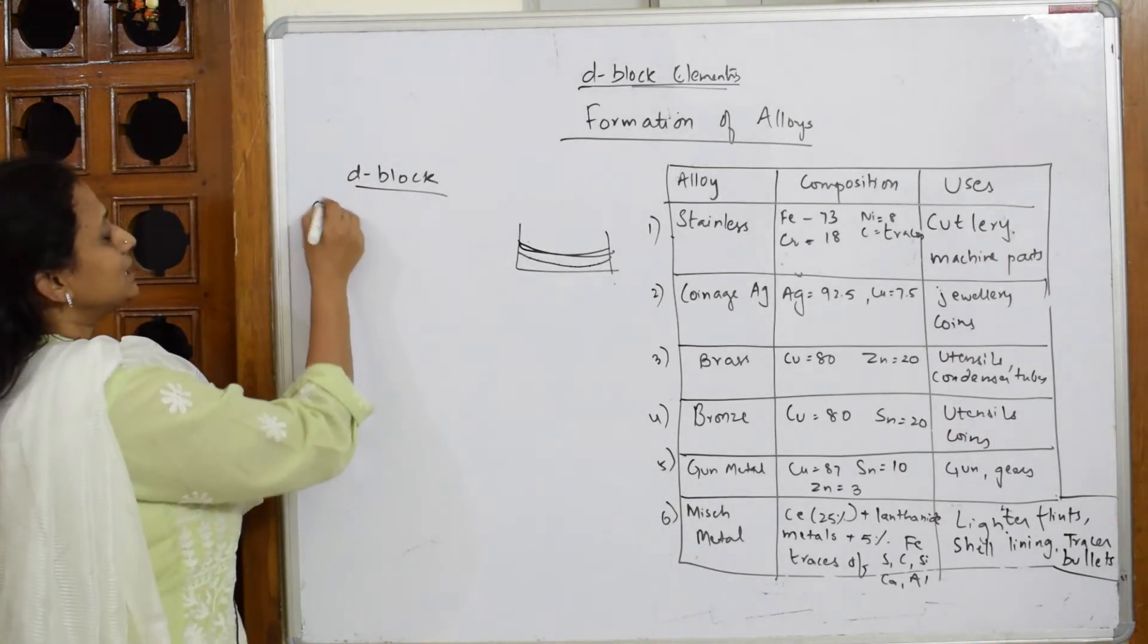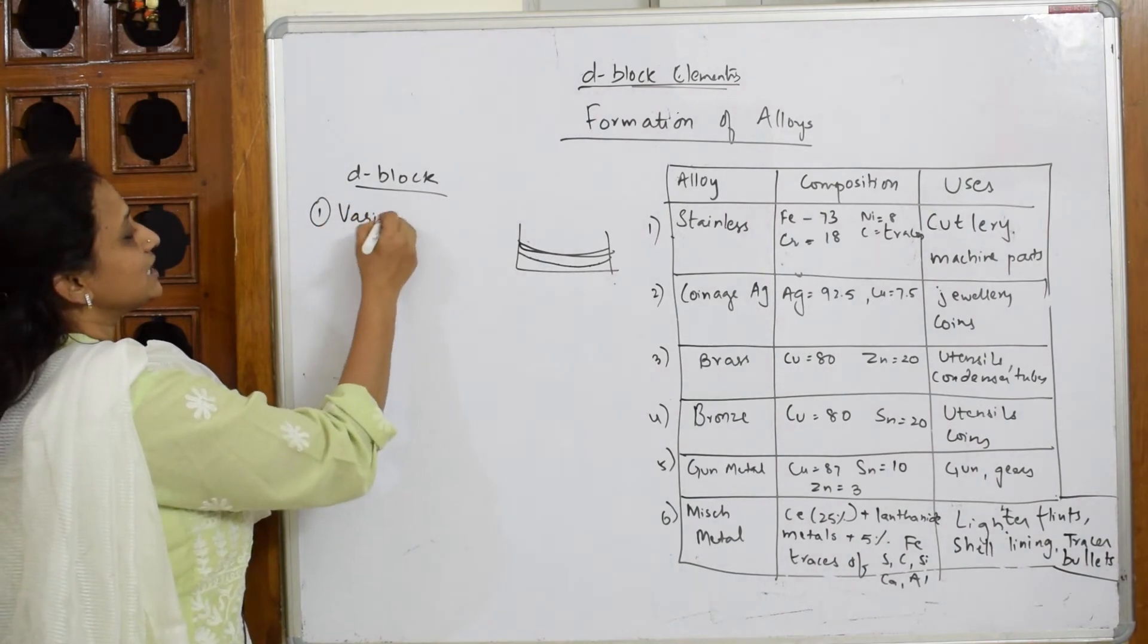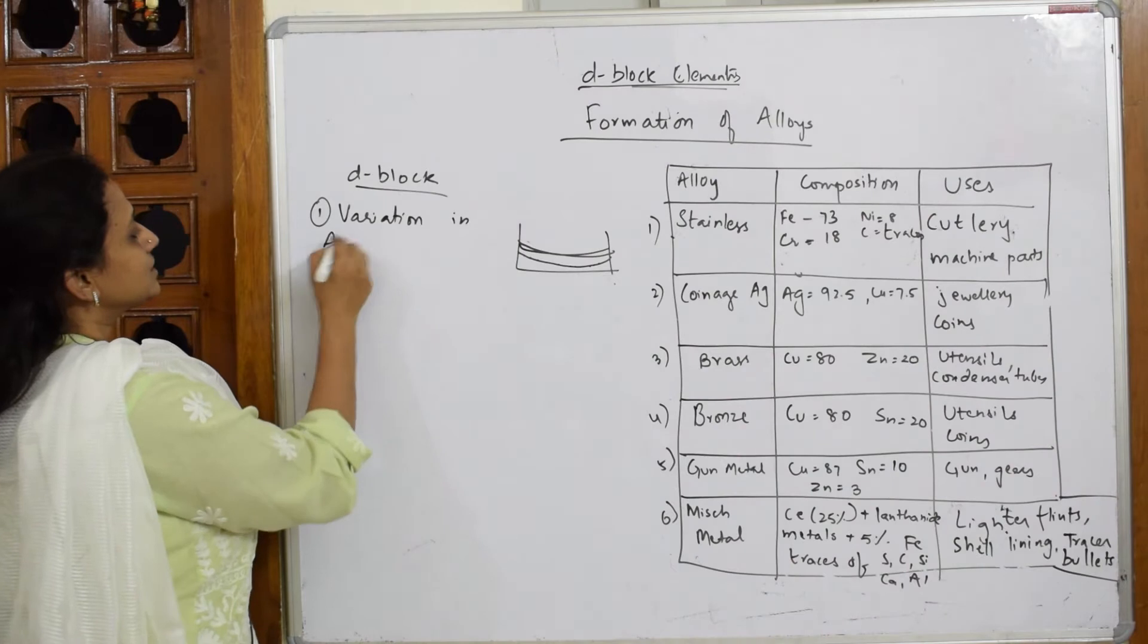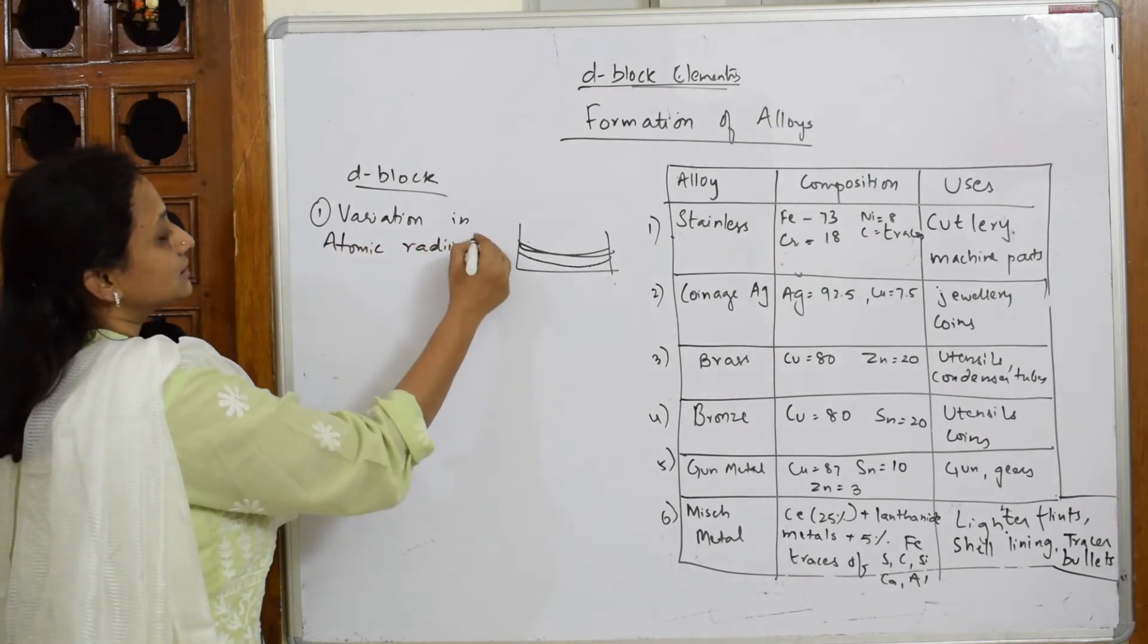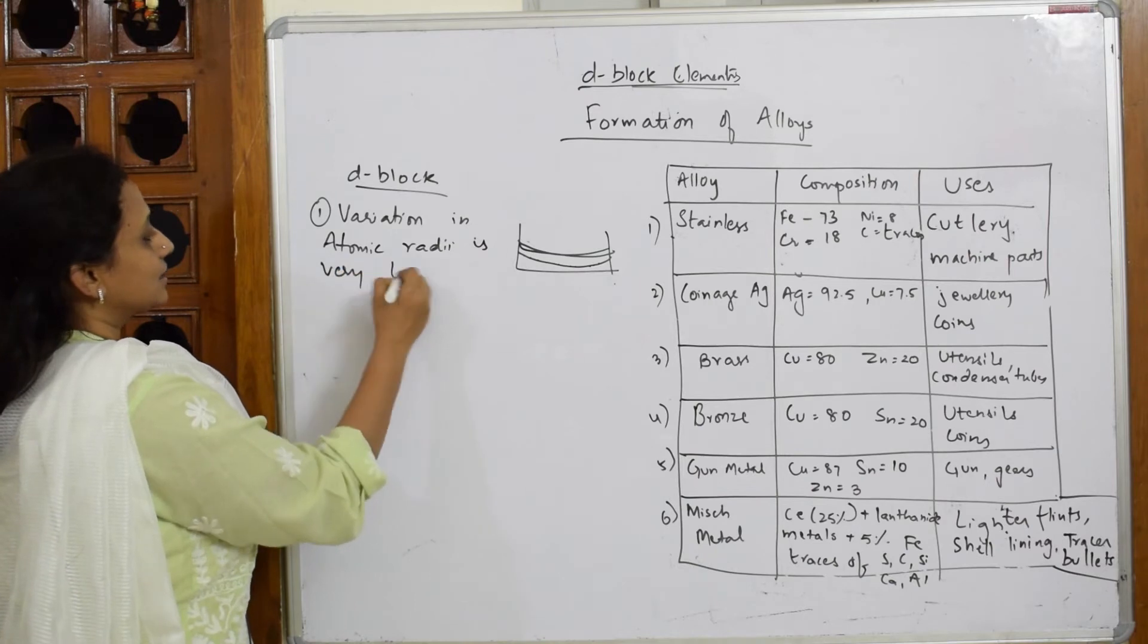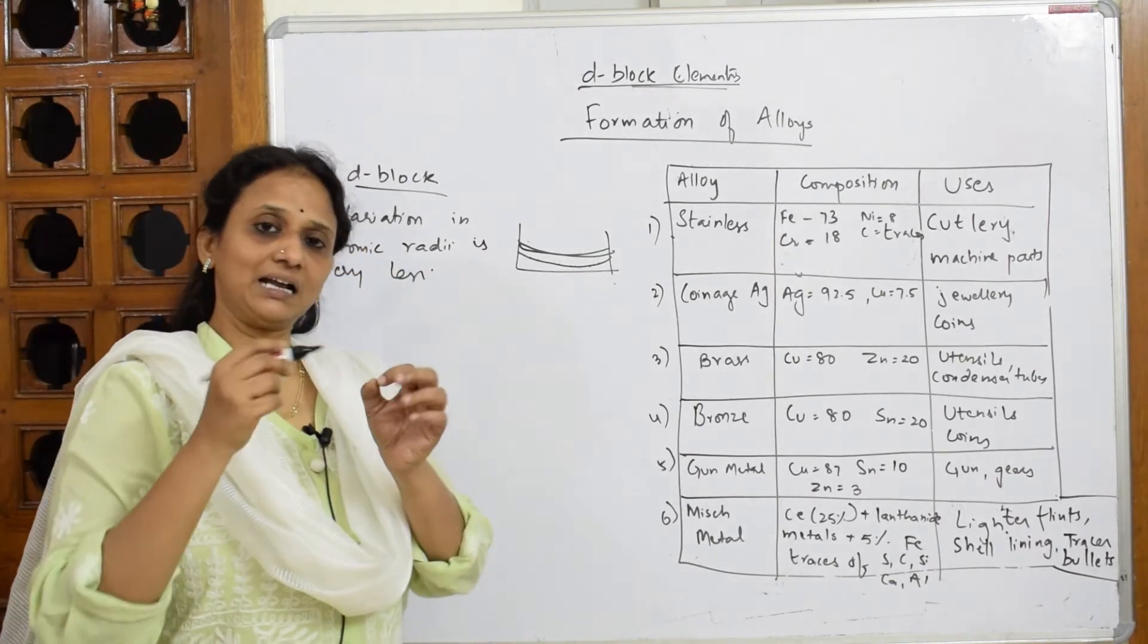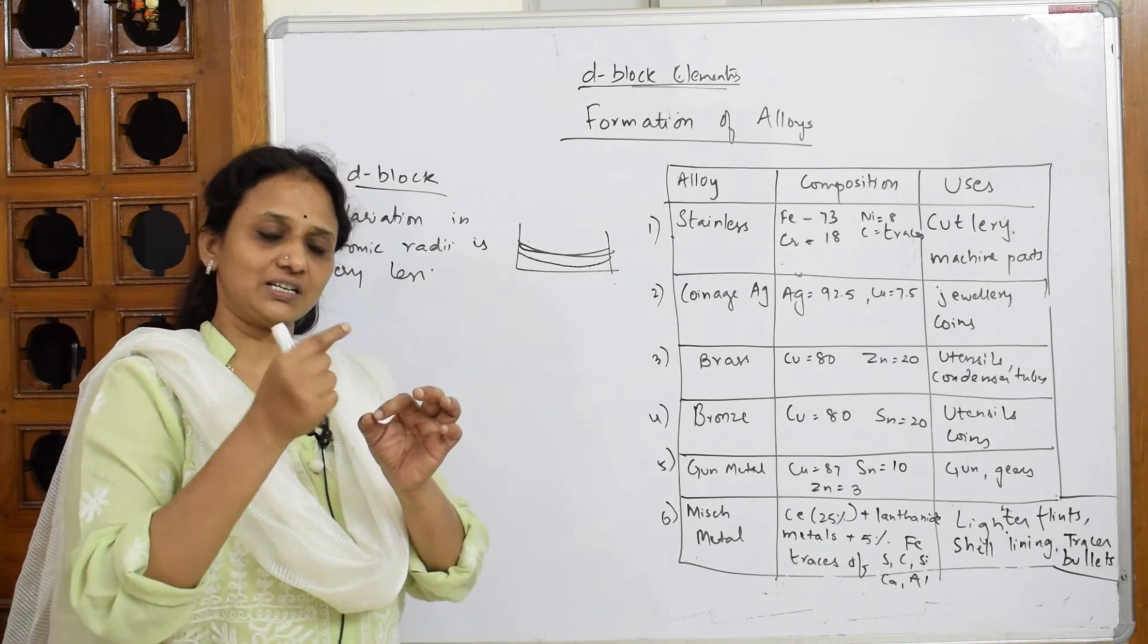For D-block elements, the variation in atomic radii is very less. When variation in atomic radii is very less, what happens? That particular metal atom has a lattice. Because of this small size variation, I can introduce or inculcate some other metal atom.